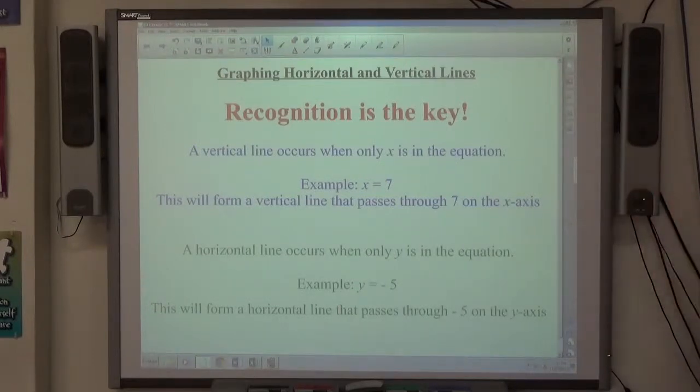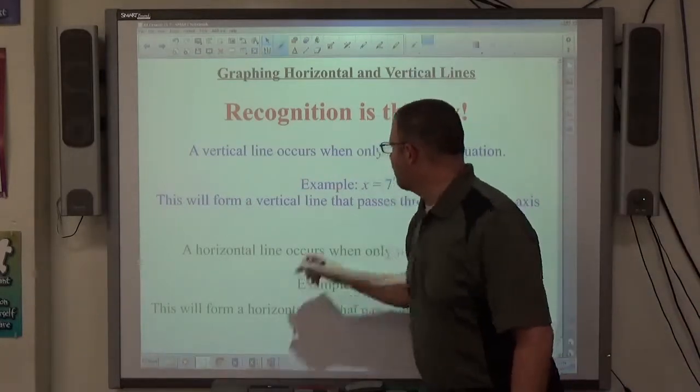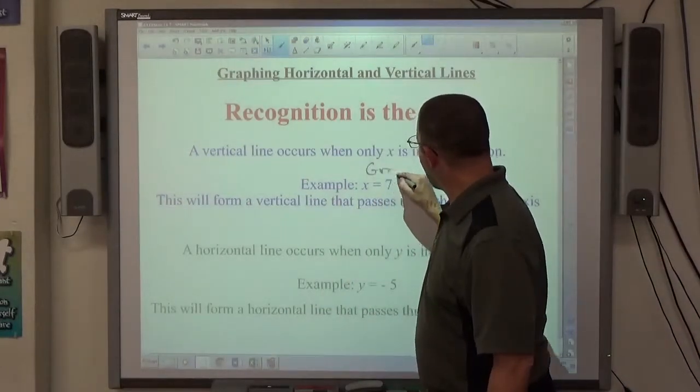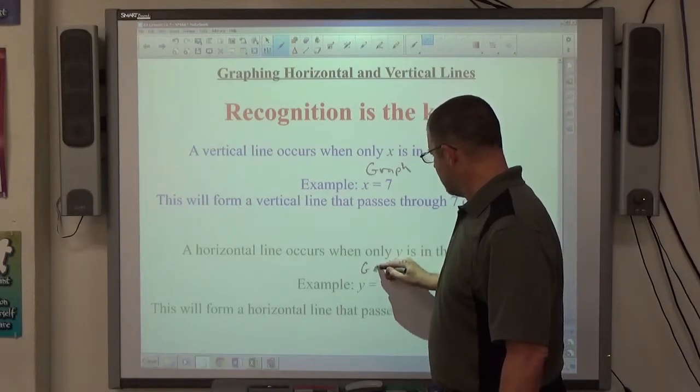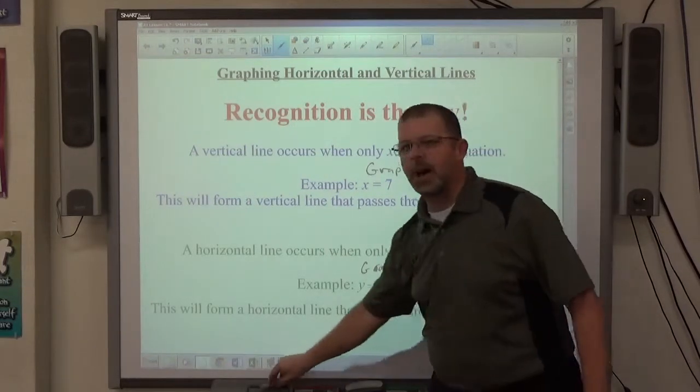Okay, the next two examples I'm going to do on one video involve both a vertical and a horizontal line, and graphing the horizontal and vertical lines is recognition. The problems will say graph x equals 7, graph y equals negative 5.